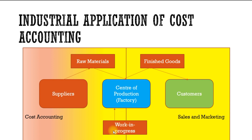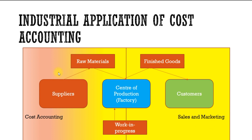When the factory converts raw materials to finished goods, it works with intermediate products — work in progress. For example, if the material is timber, they may work upon it to produce logs and fixtures, which are then used for finished goods such as wooden doors and windows. Cost accounting deals with suppliers, the center of production, raw materials, work in progress, and stores — but it does not deal with finished goods or customers, as sales and marketing handles that.